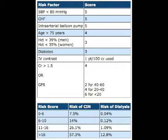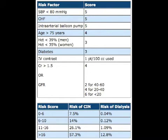You add up the score. A score of 0–6 gives less than 1% chance of requiring dialysis and about 7.5% risk of contrast-induced nephropathy. A score of 6–10 jumps to 14% for nephropathy and 0.12% for dialysis. Once you cross the 10 mark there's a significant change: scores of 11–16 carry 26.1% nephropathy risk and 1% dialysis risk. Anything over 16 is very dangerous — 57.3% nephropathy and up to 12.8% requiring dialysis, which is better than 1 in 8.